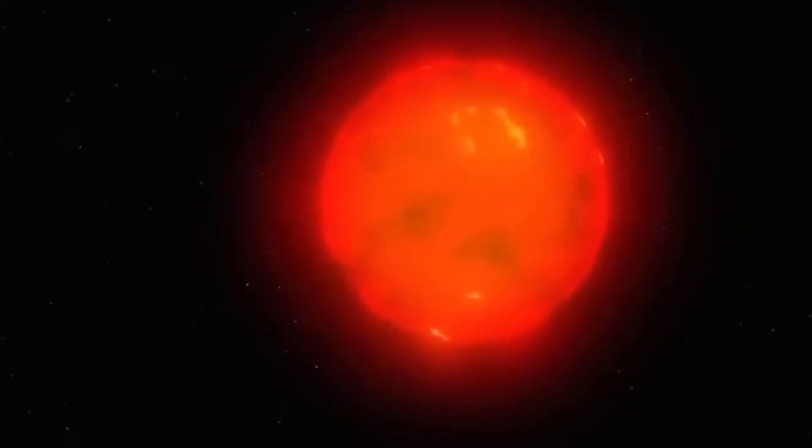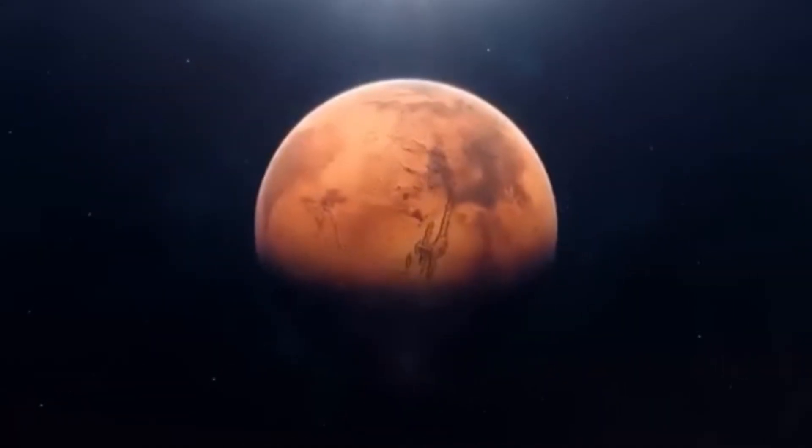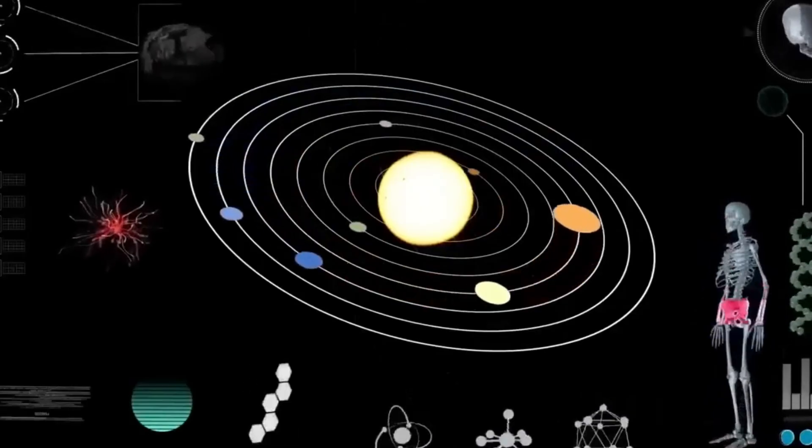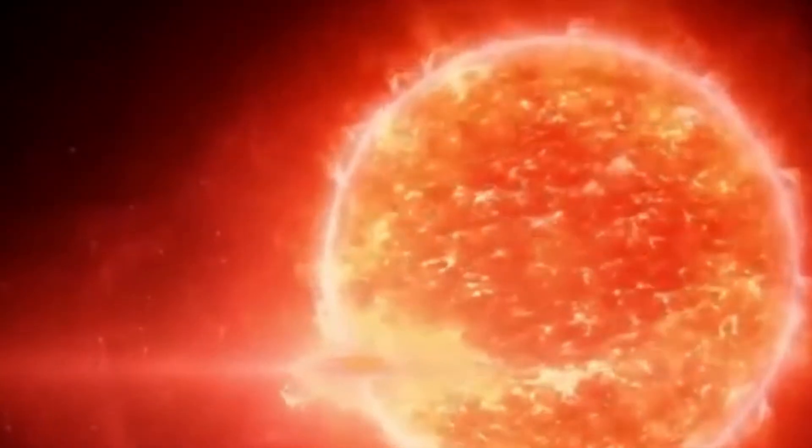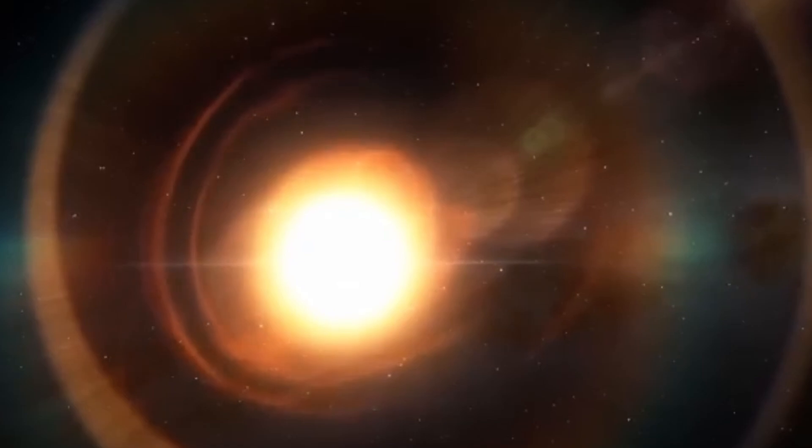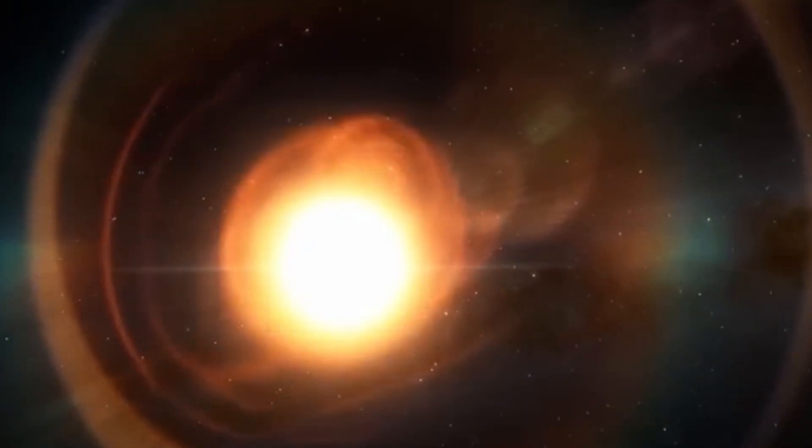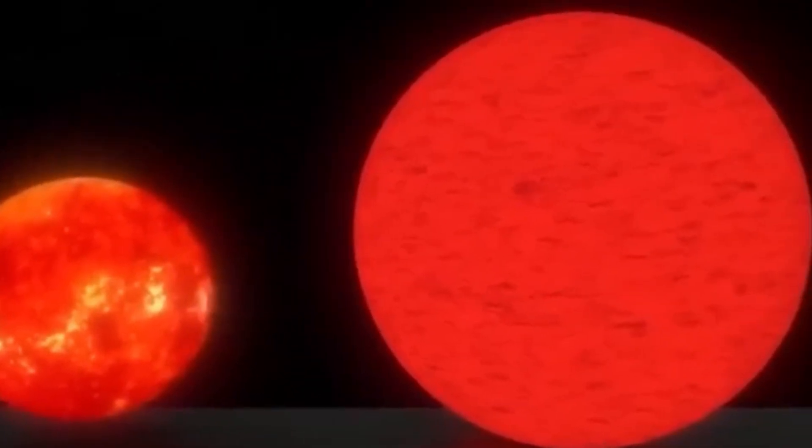But the most incredible part is what happens after the initial explosion. When Betelgeuse explodes, it's going to create something called a supernova remnant. This is like a massive, expanding bubble of hot gas and dust that glows with beautiful colors as it spreads out into space. From Earth, this would look like an enormous, slowly expanding ring of light in the constellation Orion. Over hundreds and thousands of years, this ring would grow larger and larger, creating a permanent new feature in our night sky that future generations would see for thousands of years to come.